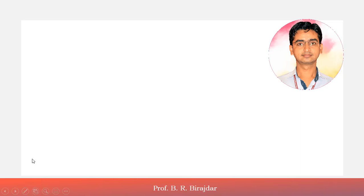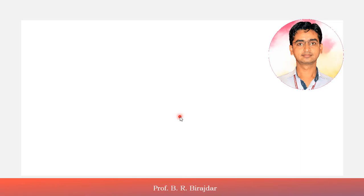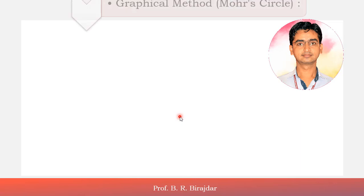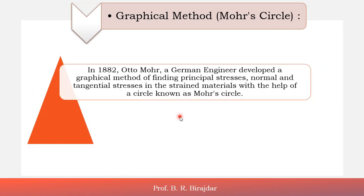Hello everyone. Till now we have seen principal stress and strain and how to find it by the analytical method. Now we are going to see the graphical method, which we can also call the Mohr's circle method. In 1882, Otto Mohr, a German engineer, developed this graphical method for finding out the principal stress, normal and tangential stress in a strained material with the help of a circle, and that circle is known as the Mohr's circle.